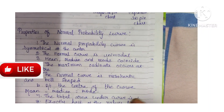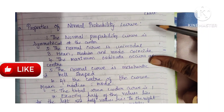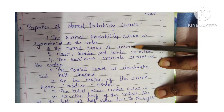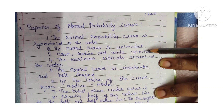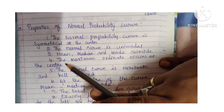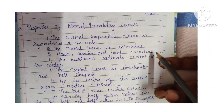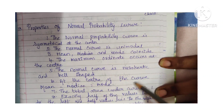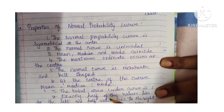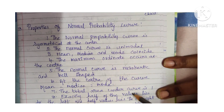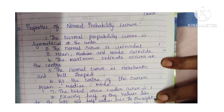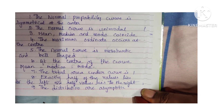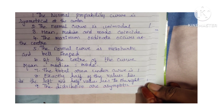Properties of normal probability curve — at least 4 are expected: the normal probability curve is symmetrical at the center; the normal curve is unimodal; mean, median and mode coincide and are equal, coinciding at the center point; the maximum ordinate occurs at the center; the normal curve is mesocurtic and bell-shaped; mean equals median equals mode at the center; the total area under the curve is 1; exactly half of the values lie left to the curve and half lie right; the distributions are asymptotic.